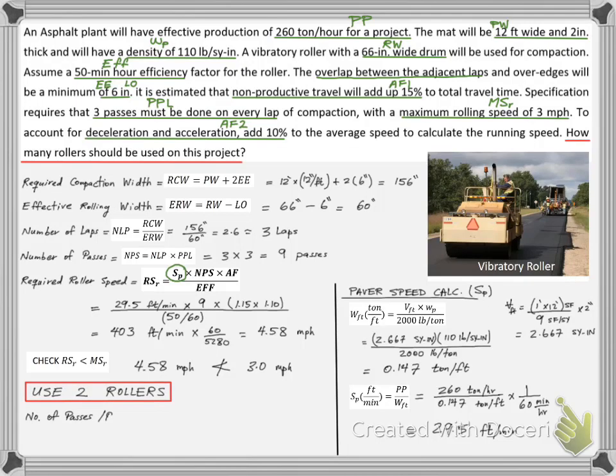So we can reduce the required rolling speed by using two rollers, not one. This way each roller will be responsible for 4.5 passes, not nine, and the roller's required speed will drop by half to 2.3 miles per hour.